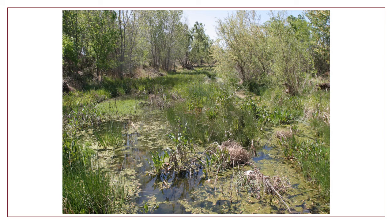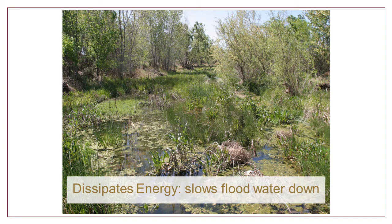One of the main functions of the riparian area is to dissipate the energy of floodwaters. The vegetation and woody debris found in and along streams and in the floodplain helps slow floodwaters down. This allows sediments such as sand, mud, and silt to be captured by vegetation. A stream's meander or crookedness also helps slow the water down, as explained in Lesson 1.